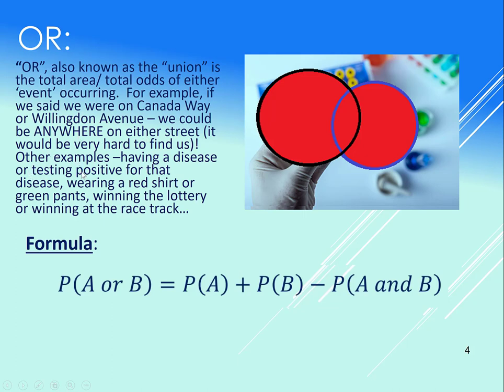Another example. So, having a disease OR testing positive for that disease, OR wearing a red shirt, OR wearing green pants, OR winning the lottery, OR winning at the racetrack. So lots of different possibilities for OR. Formula for it: A or B is the odds of A plus the odds of B minus the odds of A AND B.